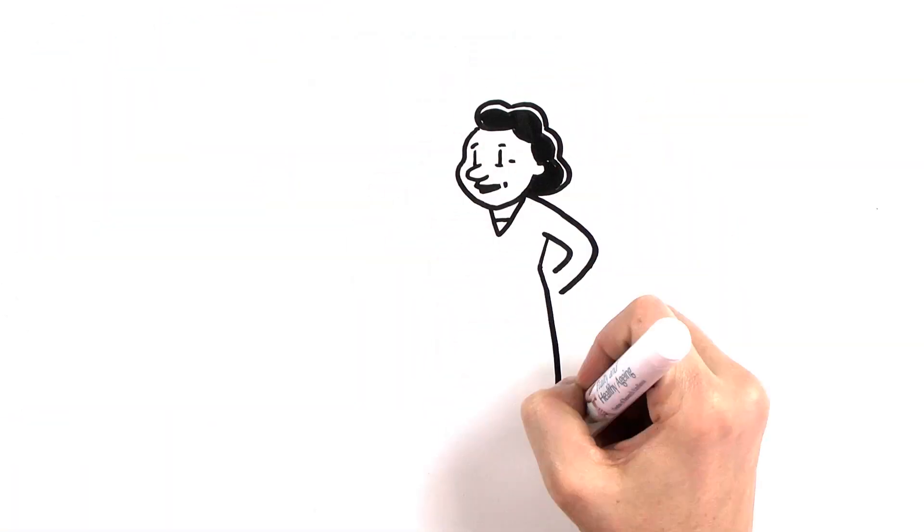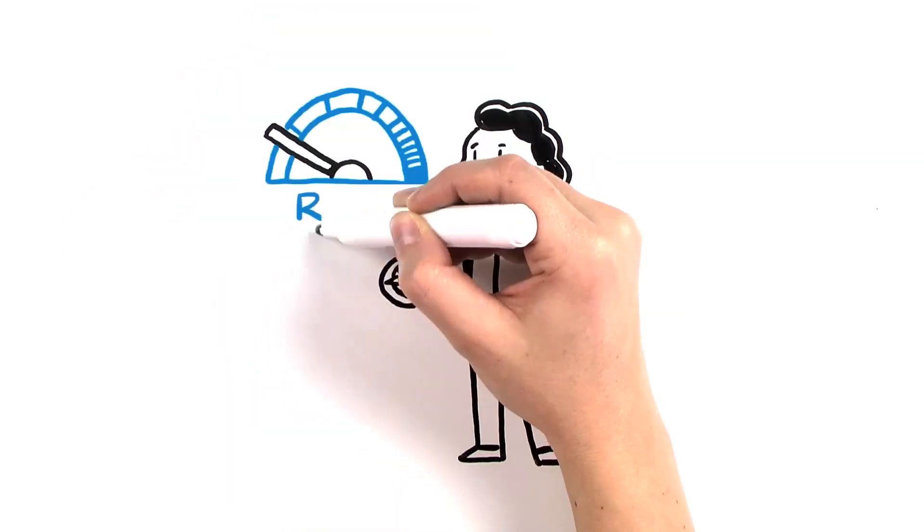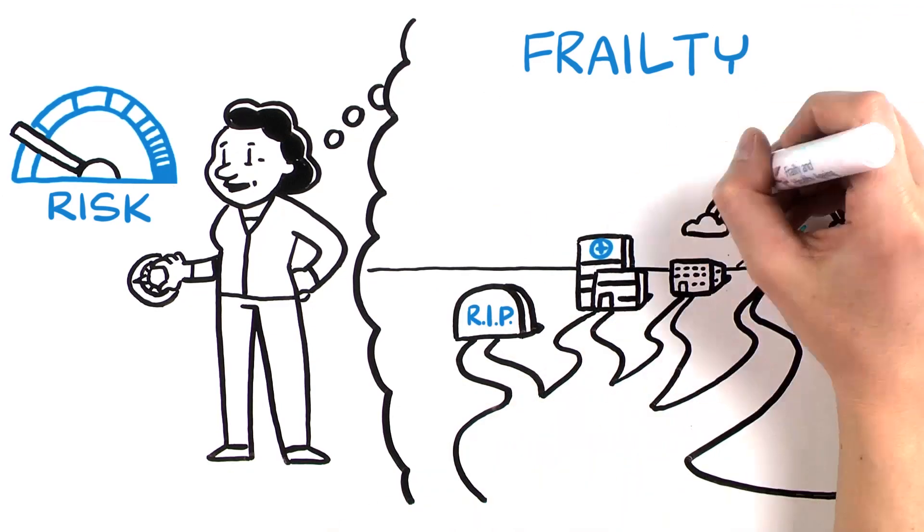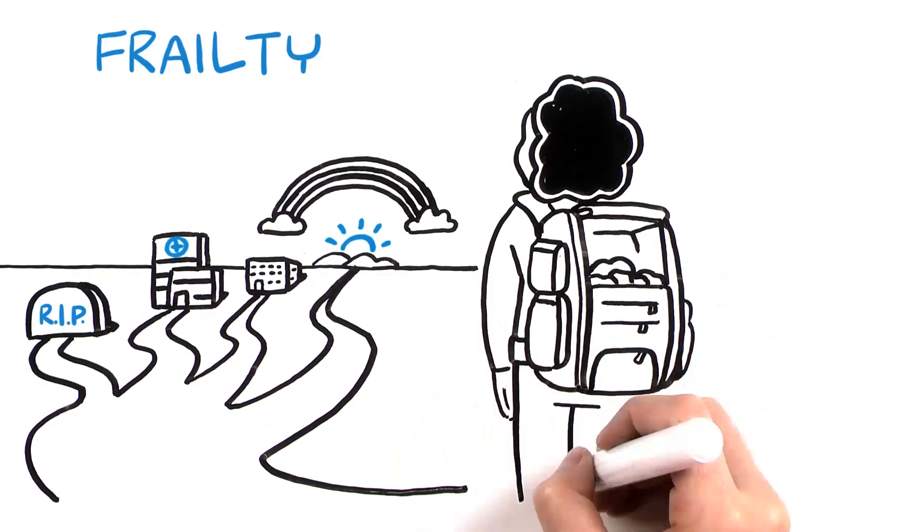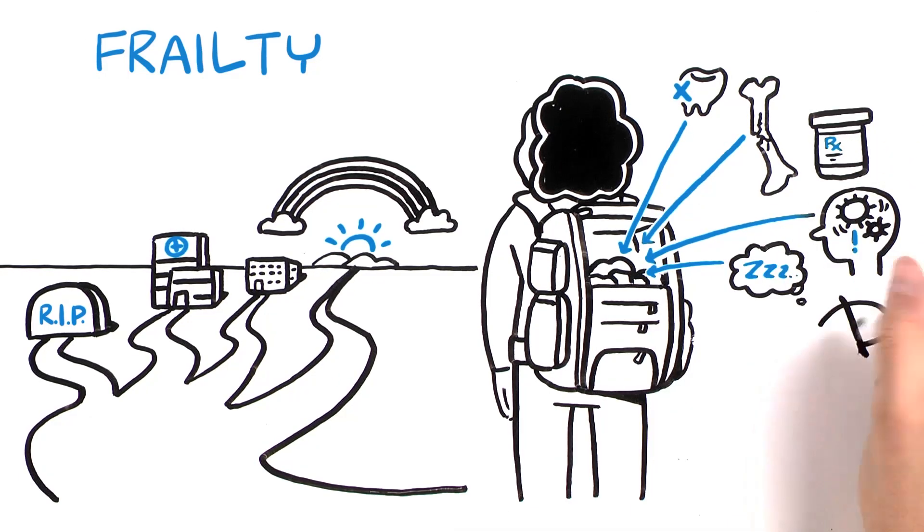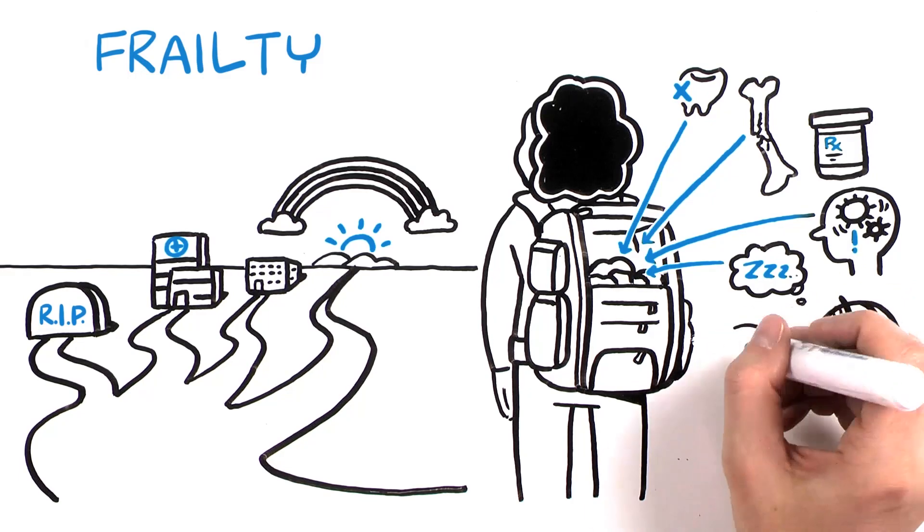But the good news is, you have some control and a chance to lower your risk. Think of frailty as a continuum or path. Frailty can begin with small changes that you don't notice, and then get worse. These changes can build up like a heavy load making your journey along the path more difficult.